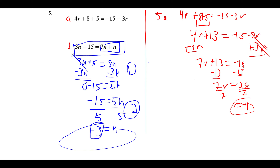For problem 5b, we have 3n minus 15 equals 7n plus n. Combining like terms on the right gives 8n, so 3n minus 15 equals 8n. We subtract 3n from both sides to get negative 15 equals 5n, then divide both sides by 5, and we get negative 3 equals n.